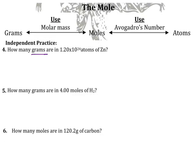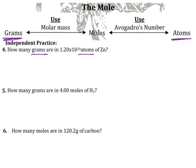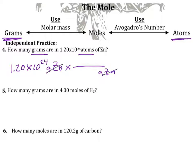We're asked to calculate grams and we're given atoms of zinc. We cannot go directly between atoms and grams — we go from atoms to moles, then moles to grams. We have 1.20 × 10²⁴ atoms of zinc. Multiply by a conversion factor and put atoms on the bottom to cancel. This takes us from atoms to moles of zinc.